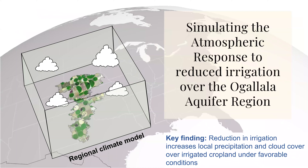Another study used a regional climate model to quantify how lower amounts of irrigation may change the regional climate across the Great Plains. One of the many key findings was that a reduction in irrigation increases local precipitation and cloud cover over irrigated cropland under favorable synoptic conditions.